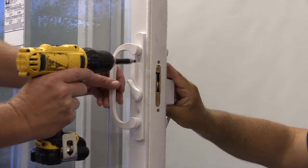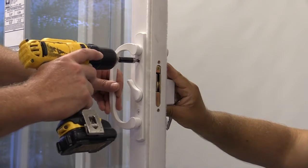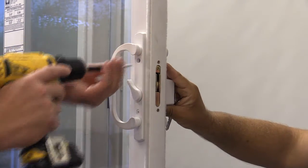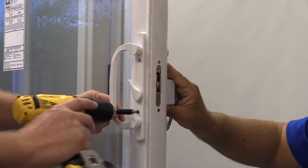Begin by removing the two screws on the face plate of the lock, which will allow you to remove it and the locking handle on the other side.